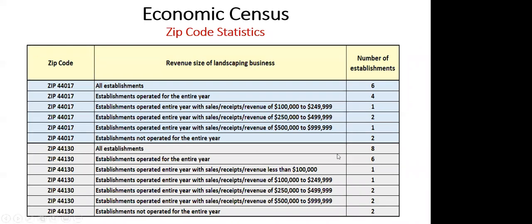In zip code 44130 there are two very large landscaping businesses revenue-wise. So you've got County Business Patterns, Non-Employer Statistics, and the Economic Census — you can combine all three to look at what's already there and how businesses are doing. You can look at them over the years as well.